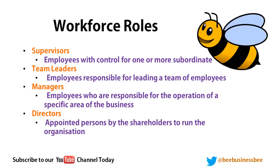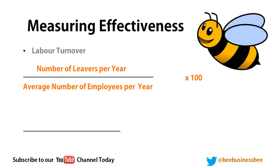To measure the effectiveness of your workforce, you need to know two formulas. Labour turnover is the number of employees leaving your business each year, measured as a percentage: number of leavers per year divided by average number of employees per year, times 100. A high percentage means lots of people are leaving; a low percentage means fewer are leaving.